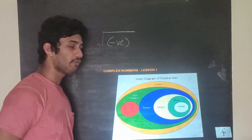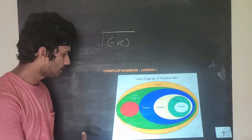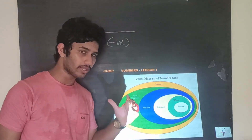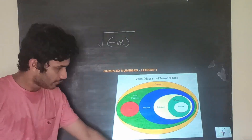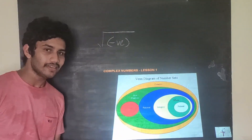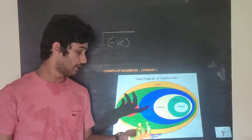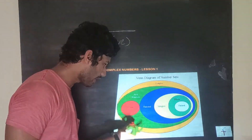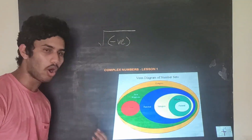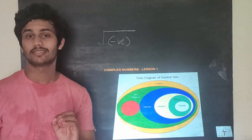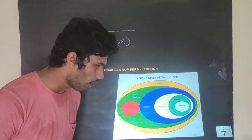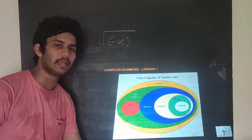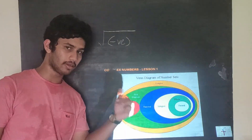This is the Venn diagram of number sets — the evolution of the number system. First you came across natural numbers, then adding zero gave whole numbers, then integers, then rational numbers, then irrational numbers. All together you have been coming across real numbers. Now you are going to face yet another number — complex numbers — which includes all the real numbers.